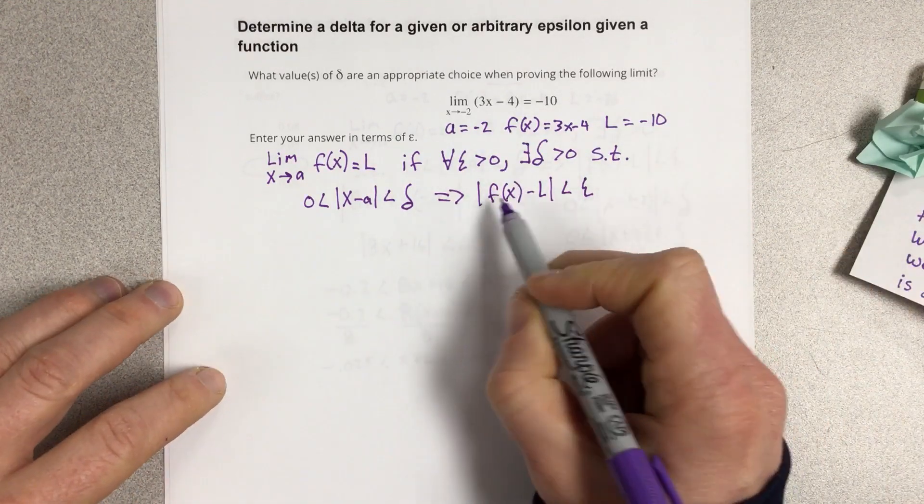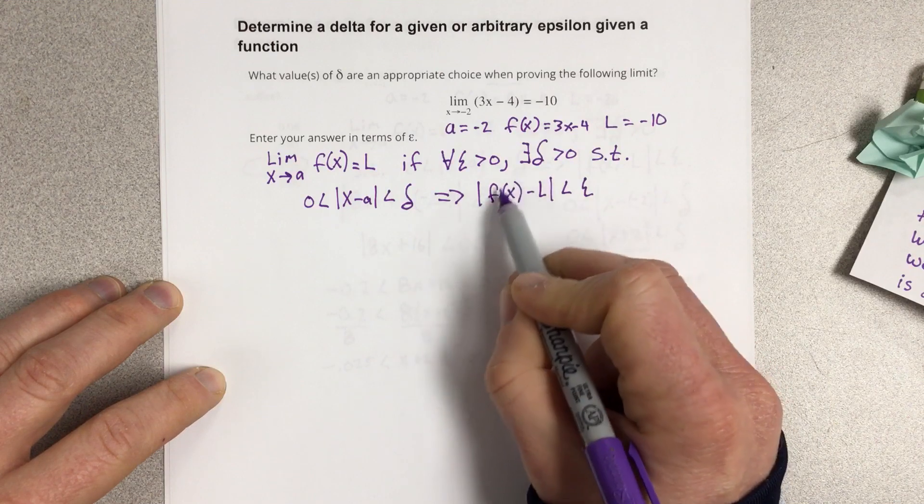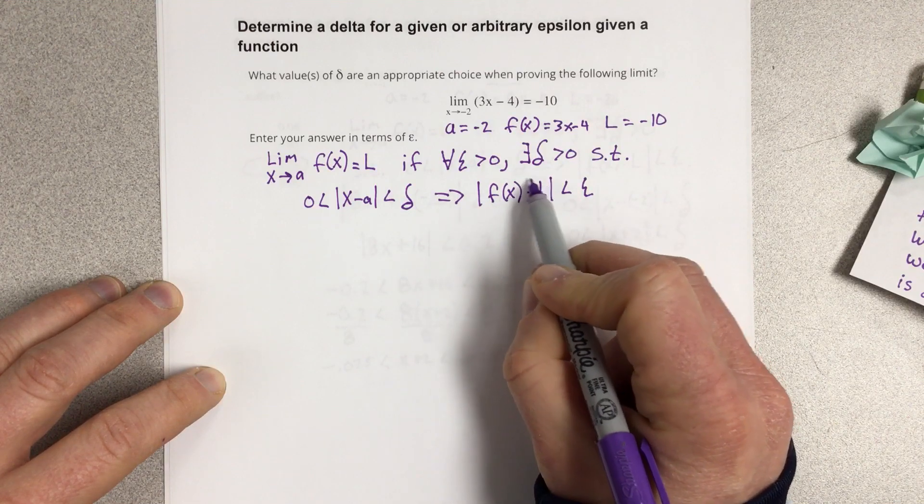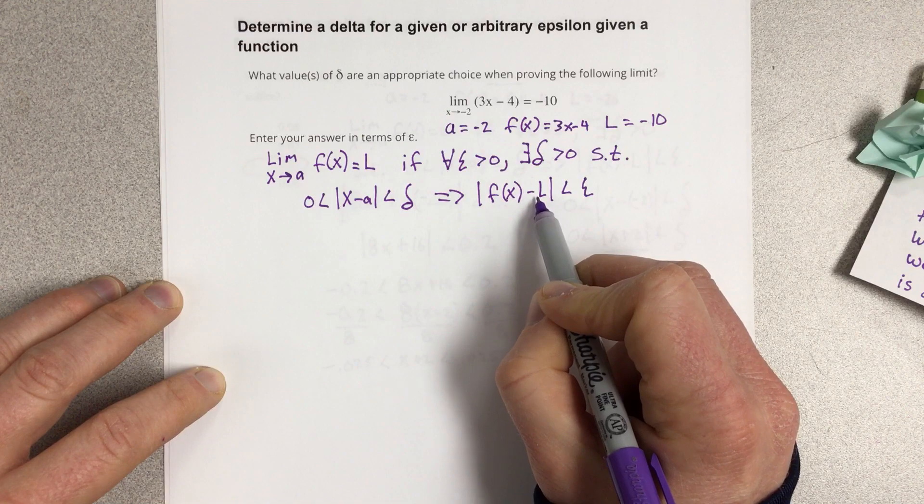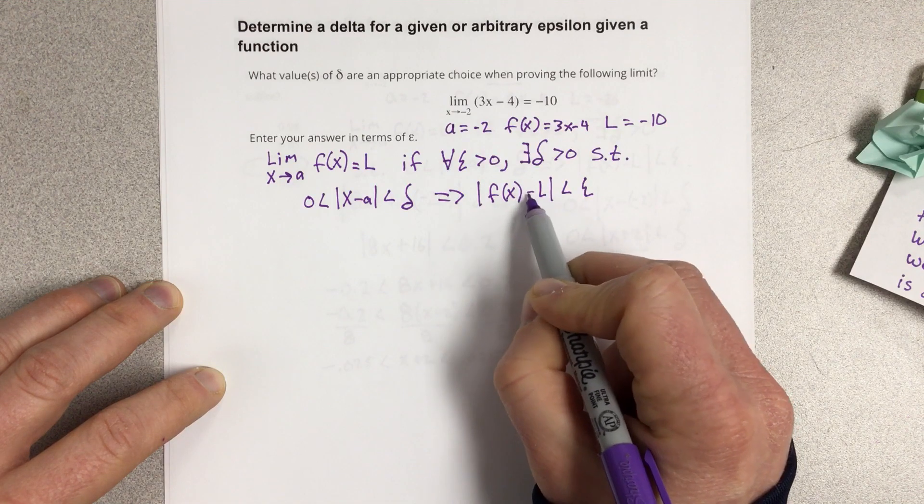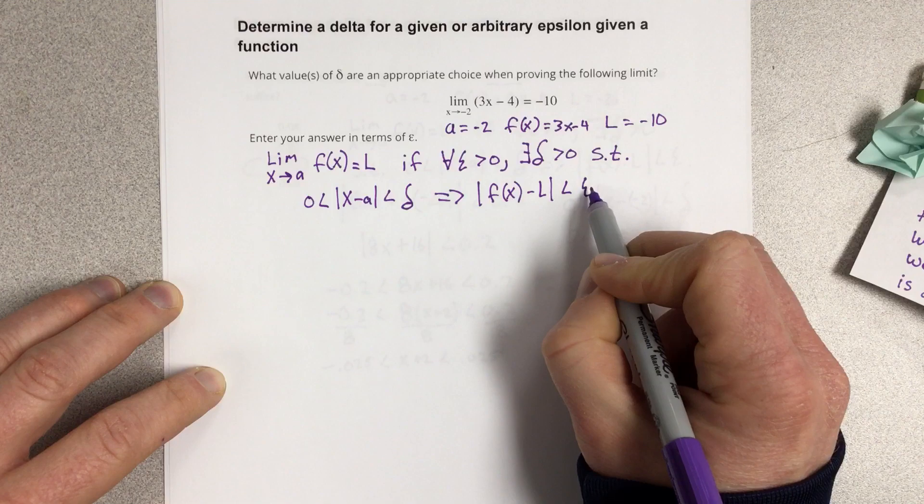So this is basically the closeness to the y values or the closeness to the limit on the y-axis, and we want that to be less than this tolerance epsilon,